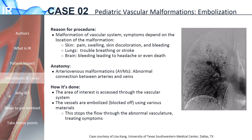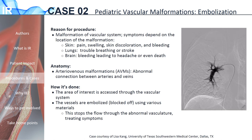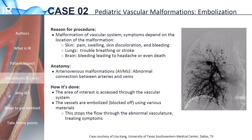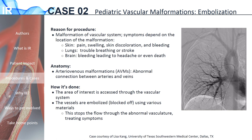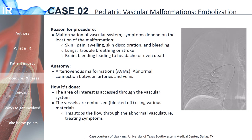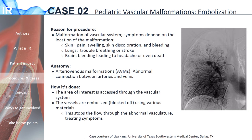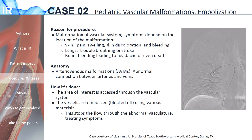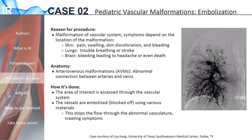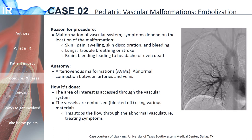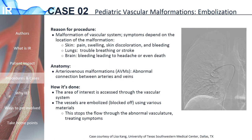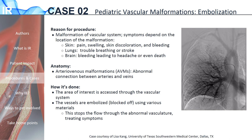A common pediatric procedure offered by IR is treatment of vascular malformations. These abnormal connections between arteries and veins, known as arteriovenous malformations or AVMs, are often present from birth. Normally, a capillary bed connects arteries and veins, but in an AVM, the high-pressure artery is directly connected to the low-pressure vein. AVMs in the skin can cause pain, swelling, skin discoloration, or bleeding. If the AVM is in the lungs, patients are at risk for stroke from a clot going through the AVM and into the brain, or problems breathing and getting enough oxygen. In the brain, AVMs can bleed and cause headaches or even death if the bleed is large enough.